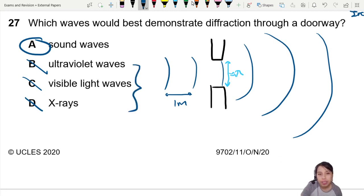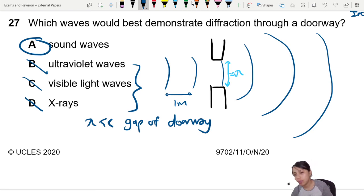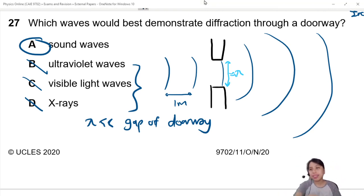For all the others, the wavelength is much less than the gap of the doorway. So, you will not be able to see diffraction happening there. That's how you can think of the principle of diffraction. Best answer is A. That's all for this video. See you in the next one.